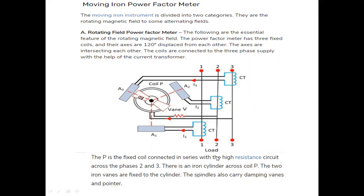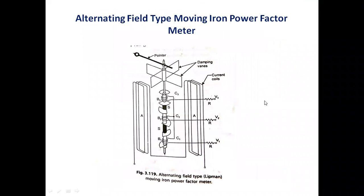Coming to the second classification of moving iron type power factor meters — that is, alternating field type power factor meter. This is a different system, also called the Lipman power factor meter.